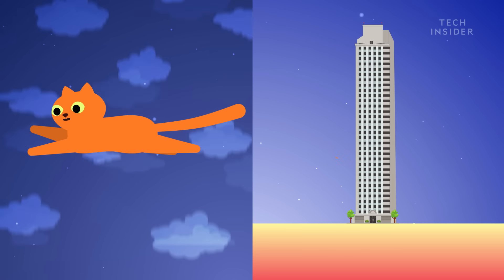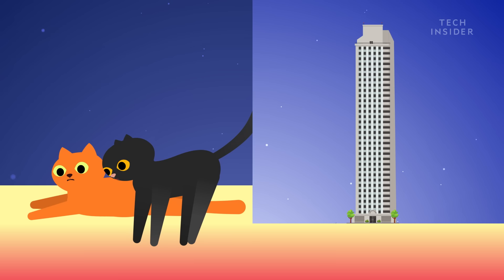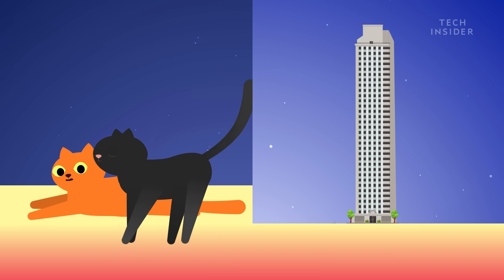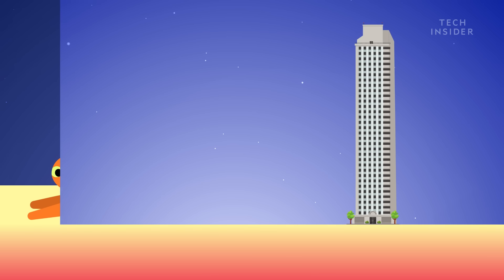So here's what researchers think is happening. From 2 to 7 stories up, cats don't have enough time to reach terminal velocity and prep for landing feet first. But once they hit terminal velocity, their instinct changes and they parachute their limbs.